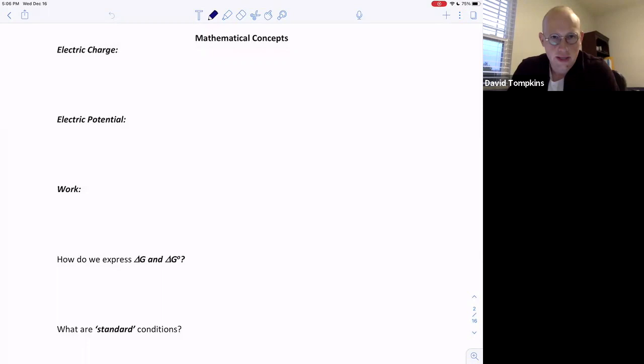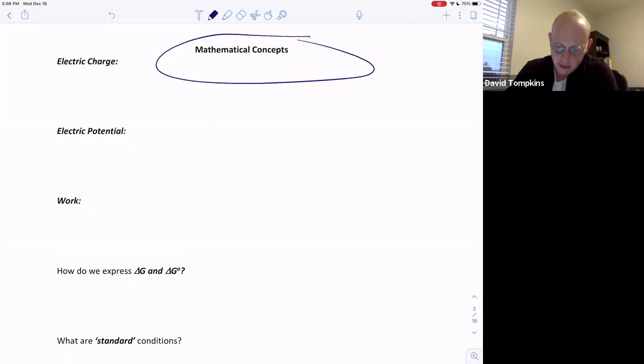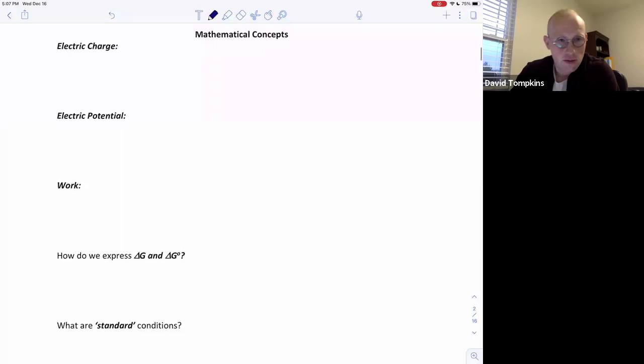In this lecture we're going to talk about some introductory mathematical concepts surrounding electrochemical reactions. We'll start by defining a few terms where first the electric charge, this is known as q and it's measured in terms of a unit that is known as a Coulomb, abbreviated as capital C.